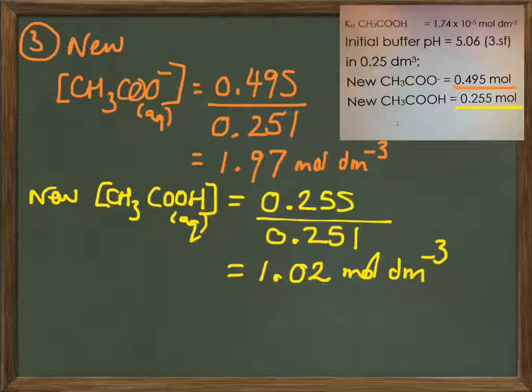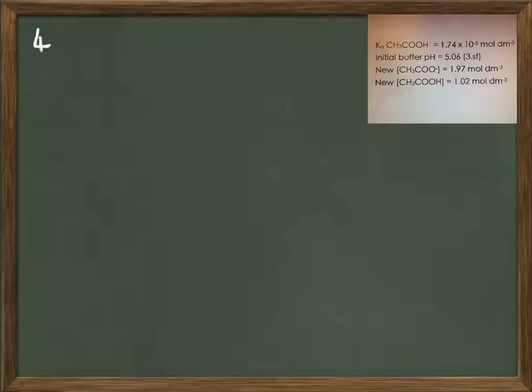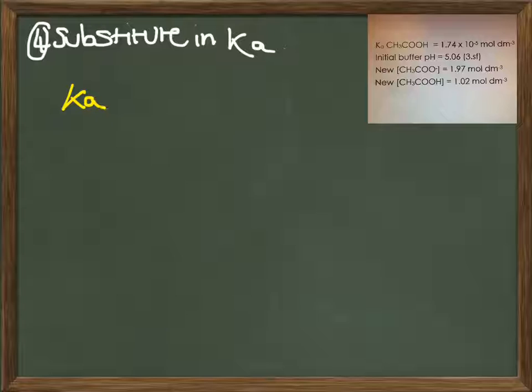Our new ethanoic acid is also 0.255 moles divided by our new volume, 0.251 dm cubed, giving us a concentration of 1.02 moles per decimetre cubed. We've then got to work out our hydrogen, our proton concentration.